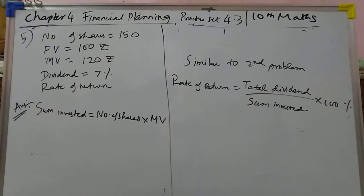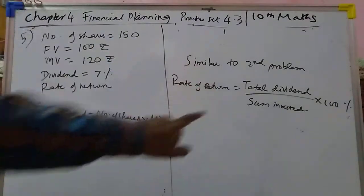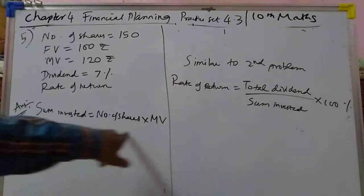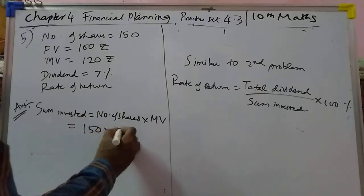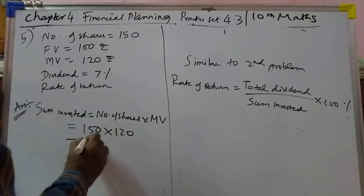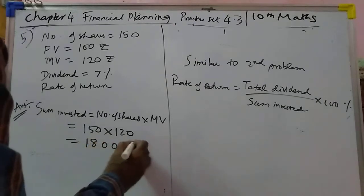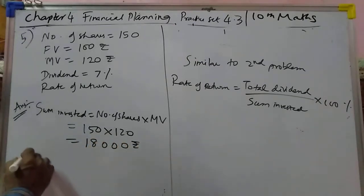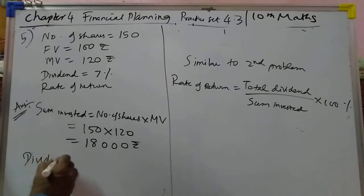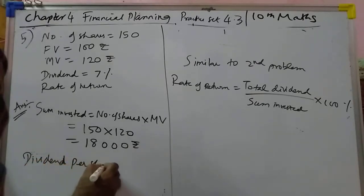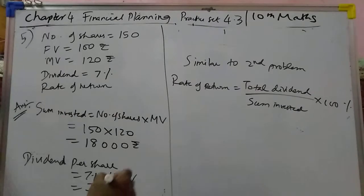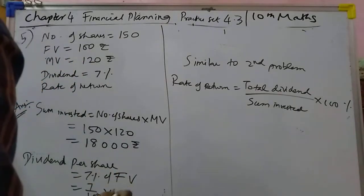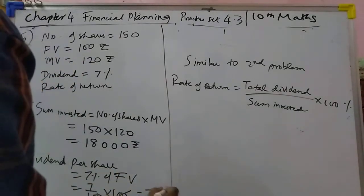Fifth problem — similar to the second one. First, calculate sum invested. Number of shares is 150 and market value is 120, so sum invested equals 150 into 120, which gives 18,000 rupees. Now find dividend per share. Dividend per share equals 7% of face value, that is 7 upon 100 into 100. The 100s cancel and you get 7 rupees.